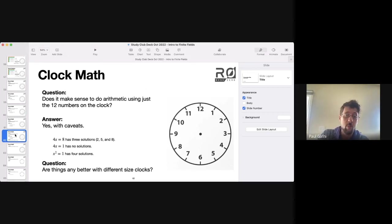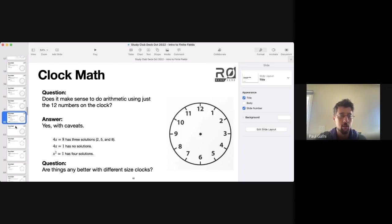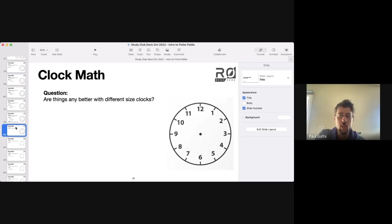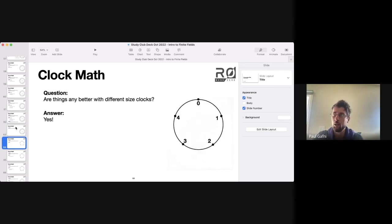And the way that we can make them go away is by looking at different sized clocks. So we started with this 12-hour clock because that's the clock that we all know and use. But it turns out that if we change to a different sized clock, things actually work out a lot cleaner.